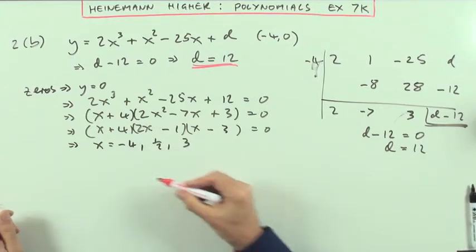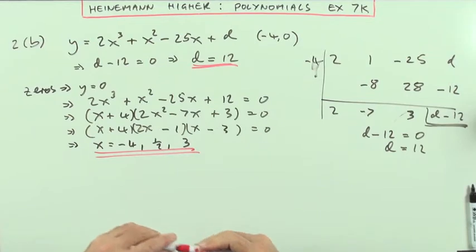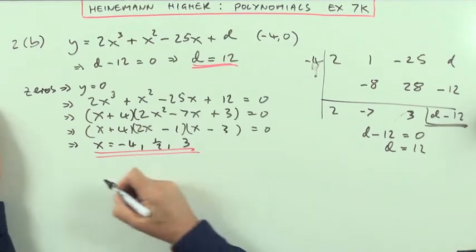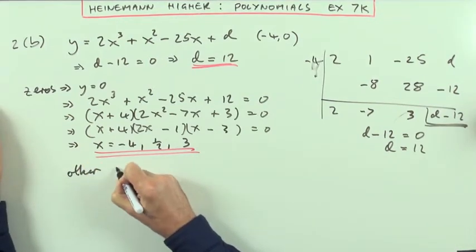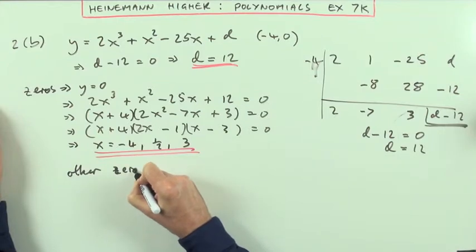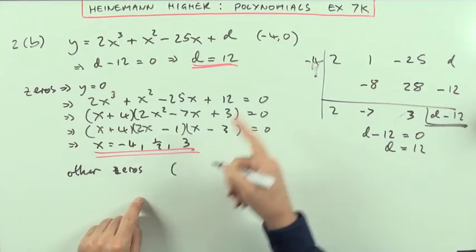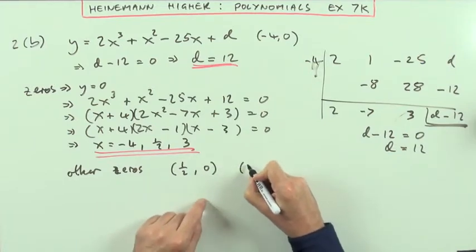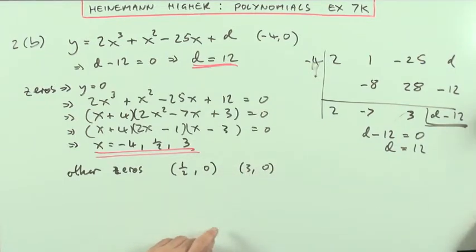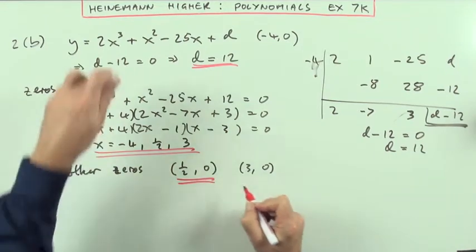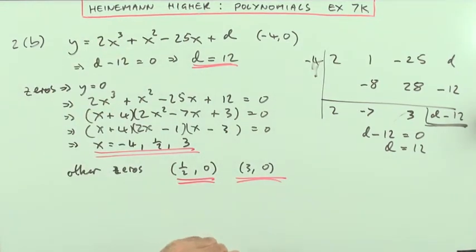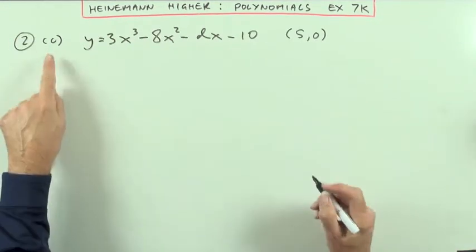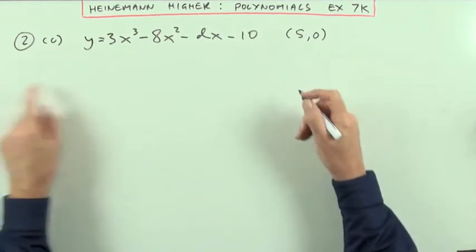So I'll put the first part, but to state the zeros formally rather than just the roots, so that means the other zeros are, now I've got the negative 4 already, so it must be a half, 0, and 3, 0, for the other two points where this graph cuts the x-axis. And so part c.